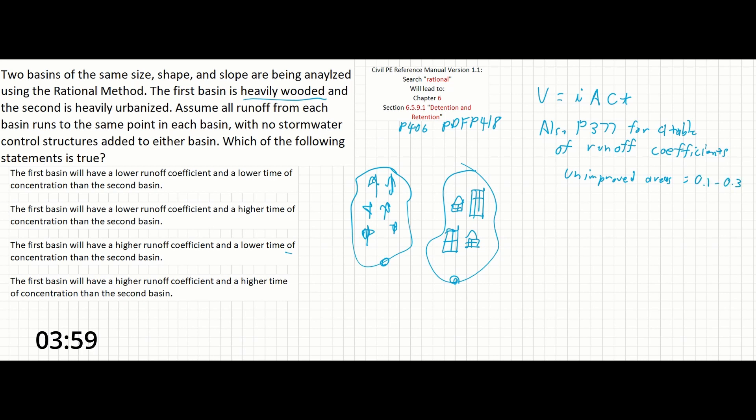And then all of the urbanized areas seem to have a runoff coefficient value that's higher than that. A heavily wooded area would be an example of an unimproved area. This is going to show us that the runoff coefficient for the first basin is going to be lower. So that's immediately going to give us either this one or this one.